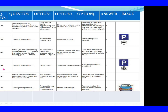Question 144: The sign represents. Option 1: Petrol pump. Option 2: Parking lot auto-rickshaw. Option 3: Auto-rickshaw parking prohibited. The right answer is Option 2: Parking lot auto-rickshaw. Question 145: Where the road is marked with a continuous yellow line, the vehicle should. Option 1: Not attempt to cross the yellow line. Option 2: Allow overtaking only through the right side of the yellow line. Option 3: Cross the line only when overtaking a vehicle in front. The right answer is Option 1: Not attempt to cross the yellow line.